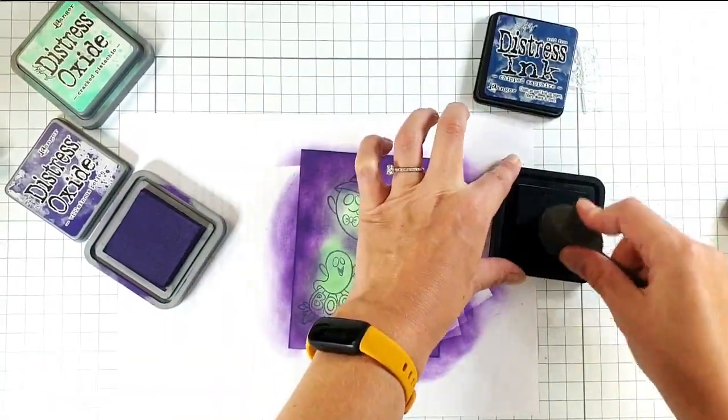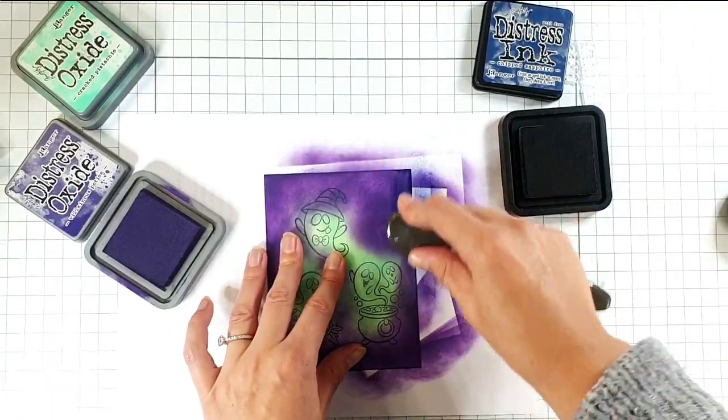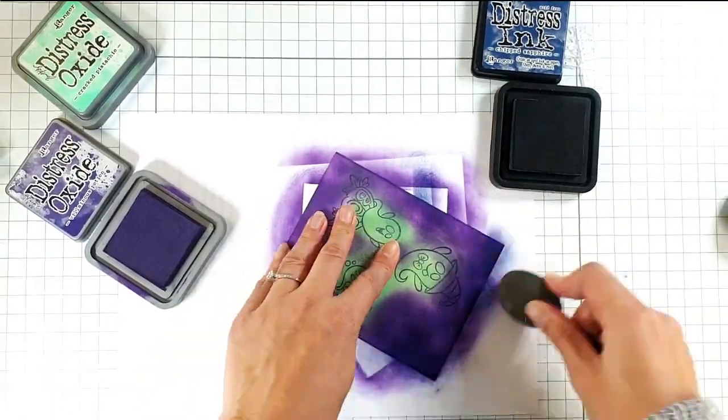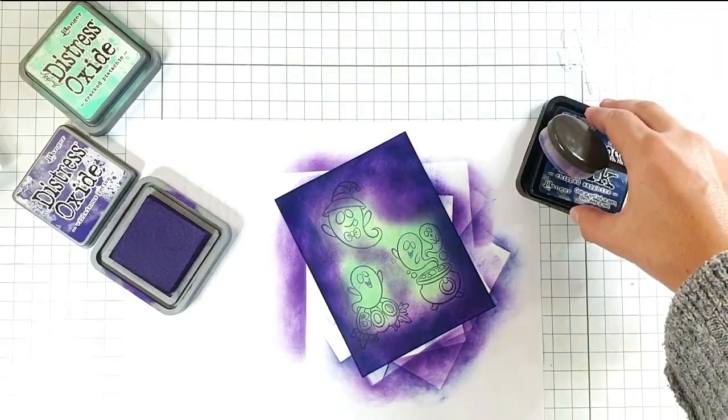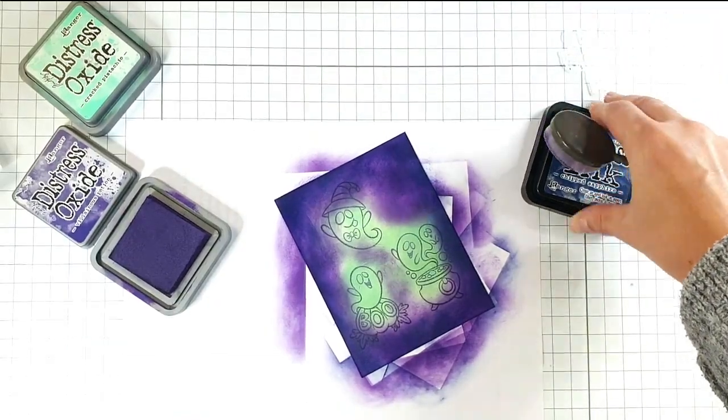I'm going to grab some of the Chipped Sapphire and just go right around the edges with it, and then I'll go back through the colors and kind of neaten it up a bit.